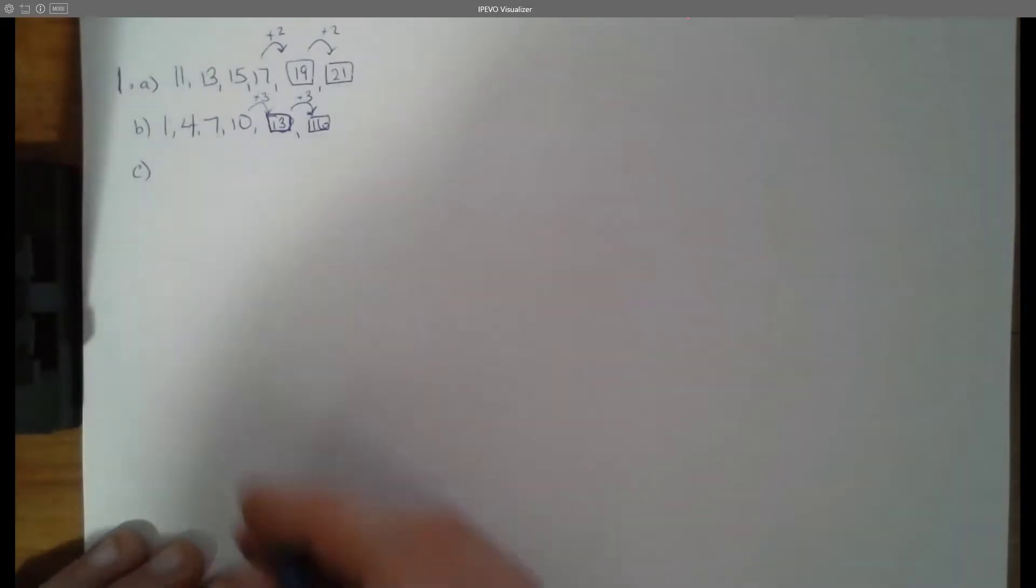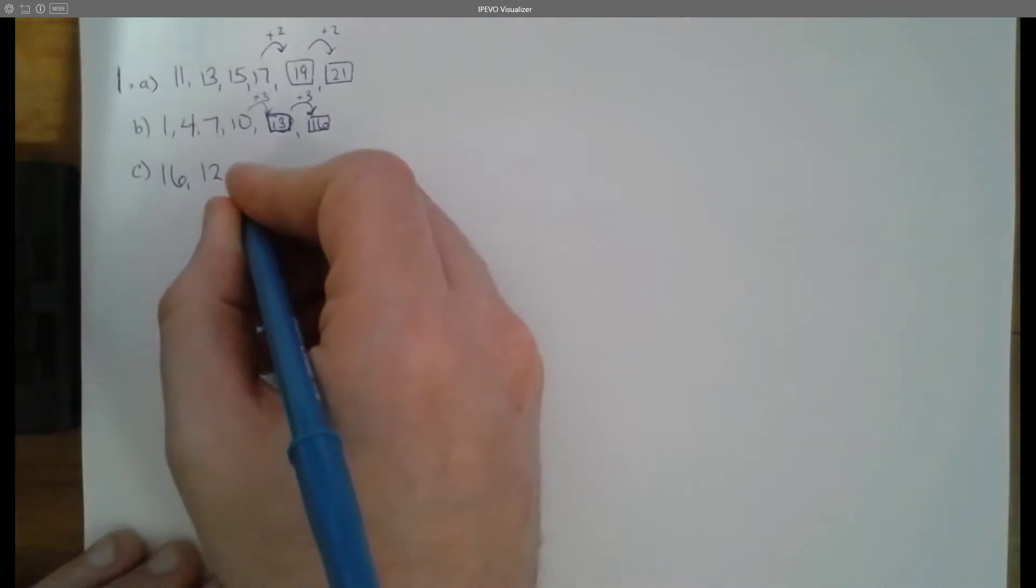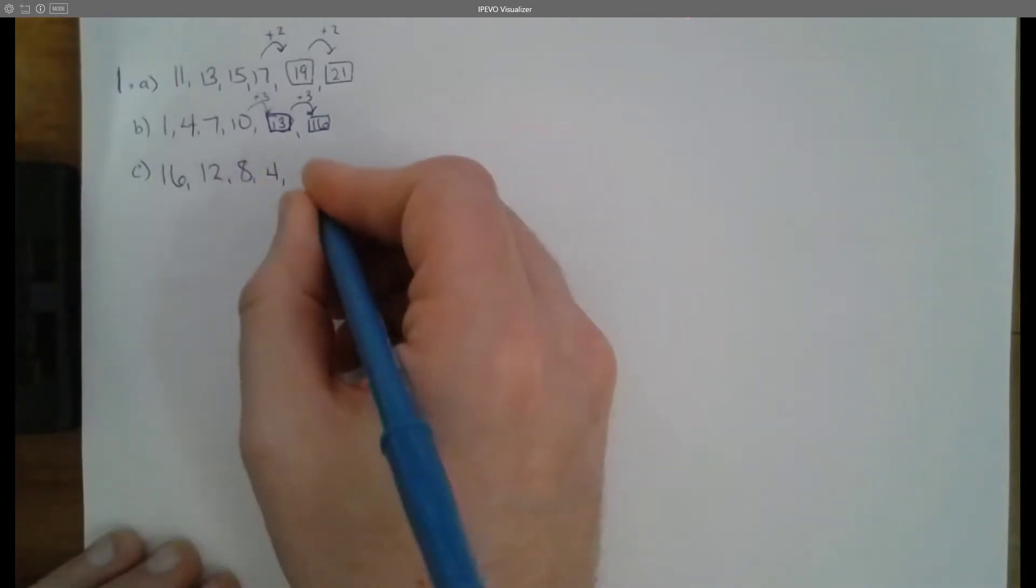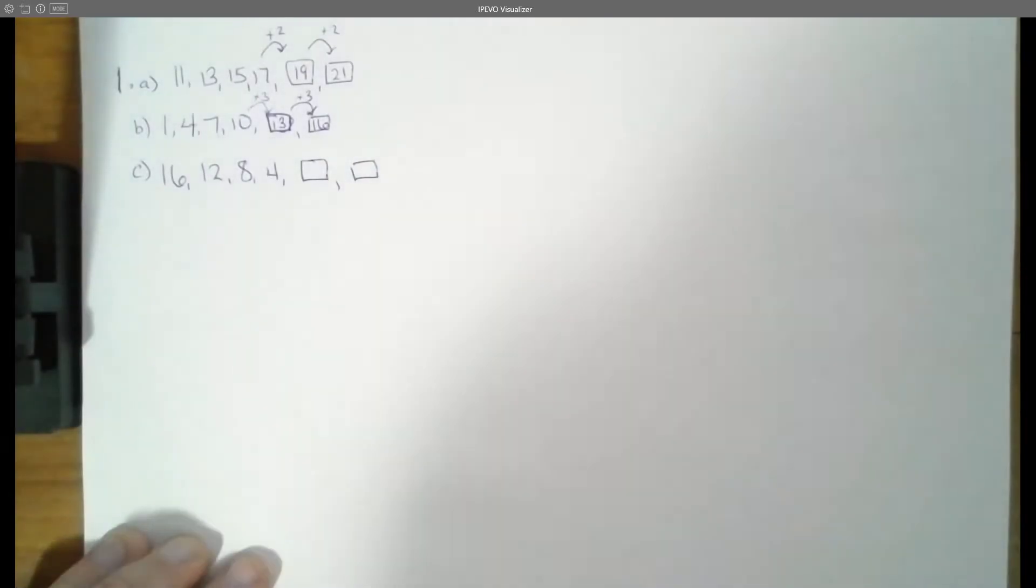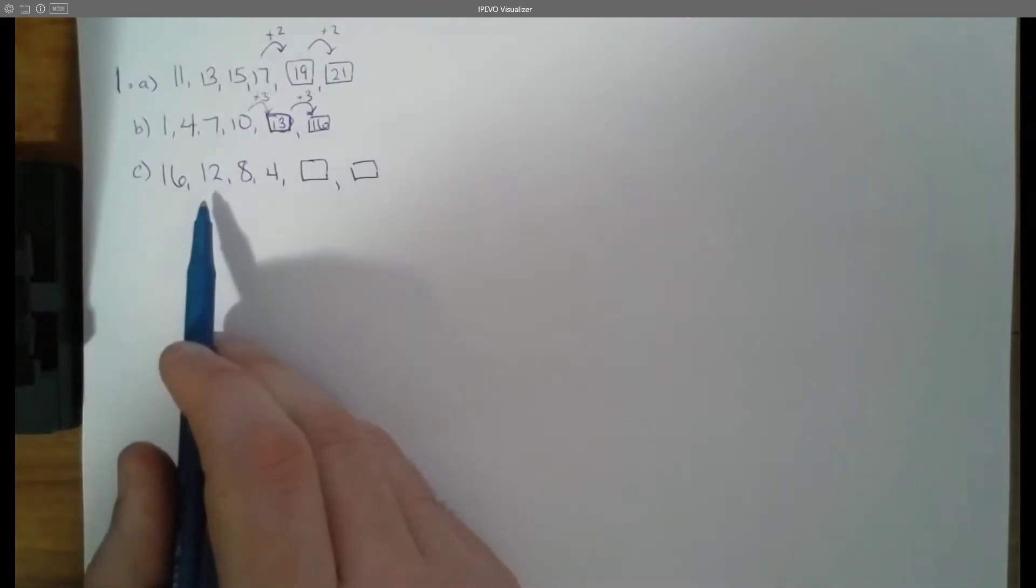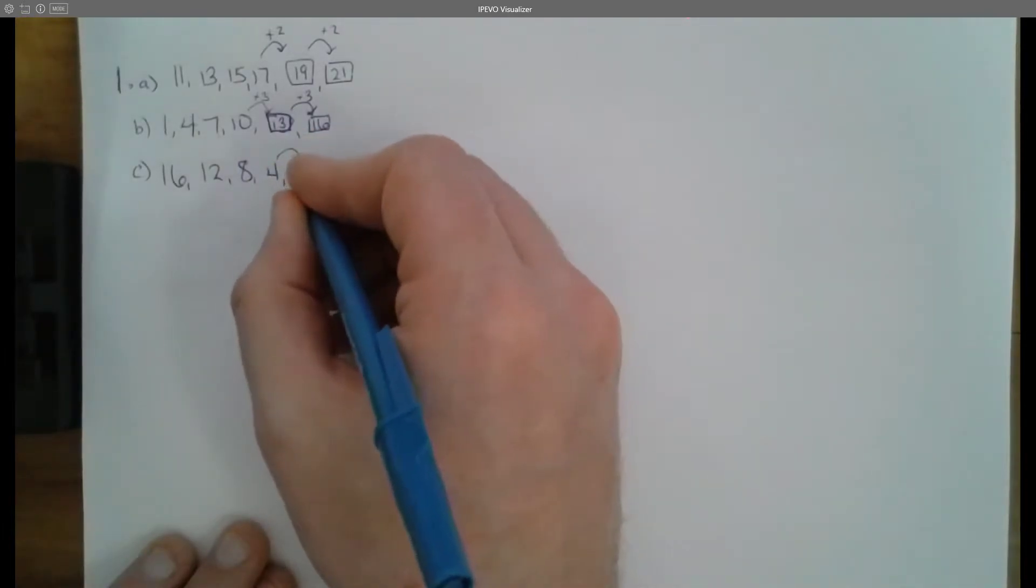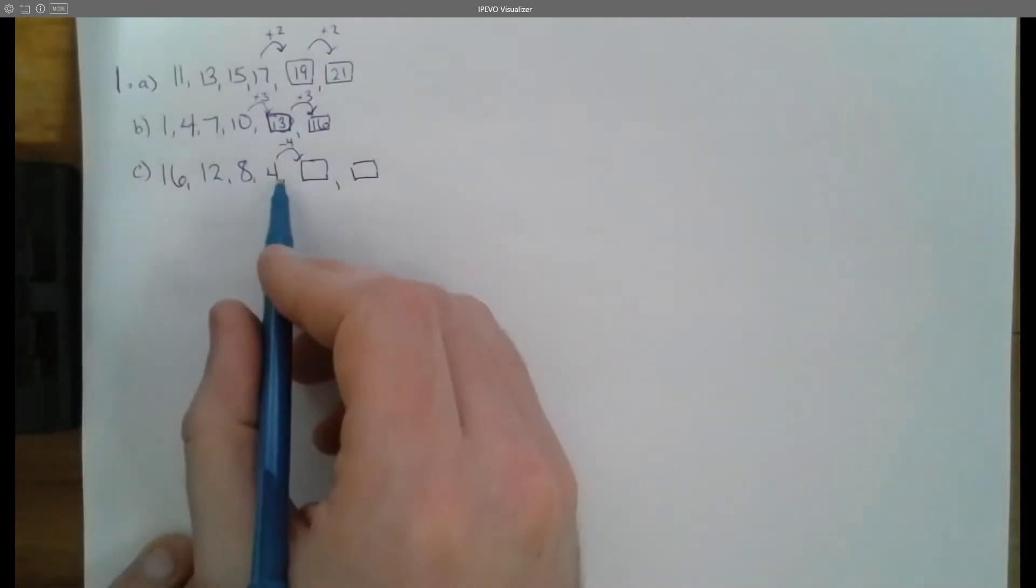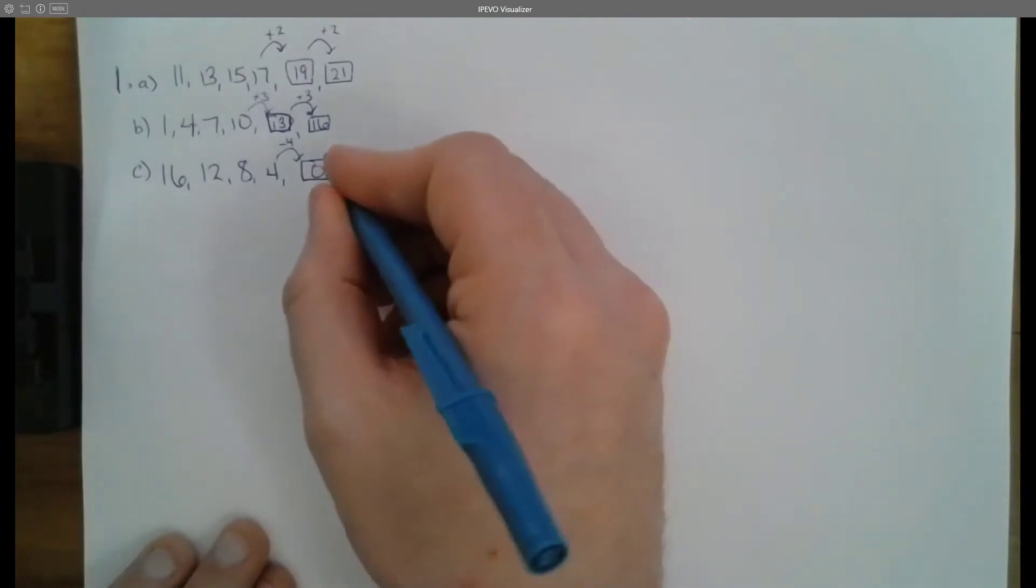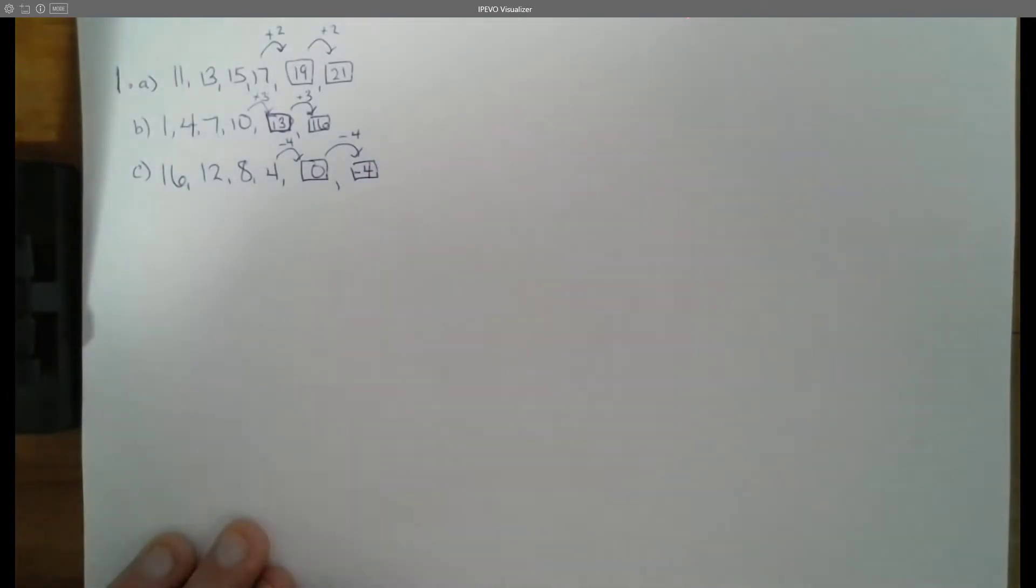C. We start off with 16, 12, 8, 4 and then complete the next two terms in the series. This time we're not going up, instead we are going down. Going from 16 to 12 we're going down by 4. 12 to 8 we're going down by 4. 8 to 4 we're going down by 4. So our rule here is that each time we are subtracting 4. 4 minus 4 is going to give us 0. But we can still subtract 4 from that to get to our next term. We're just going to end up in the negatives at negative 4. So our two terms now are going to be 0 and negative 4.